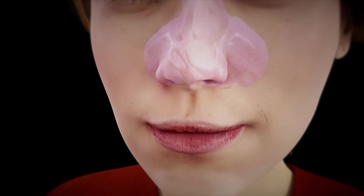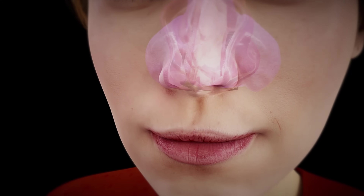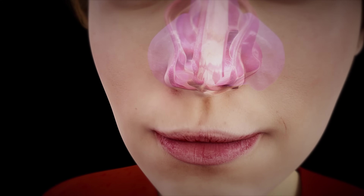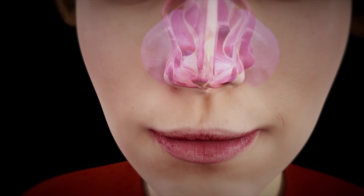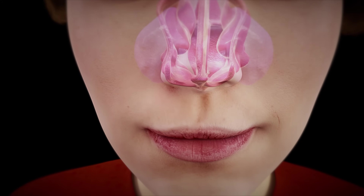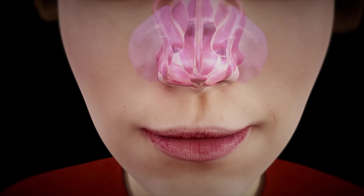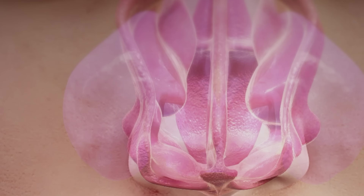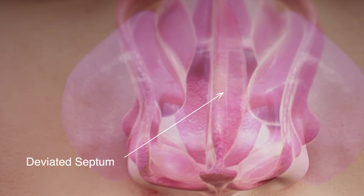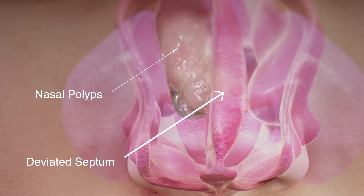Normal healthy sinuses connect to the nasal passages in a complex network of airflow and drainage passages. Recurrent or chronic sinusitis may occur due to anatomic blockages such as a deviated septum, nasal polyps, or blocked sinus openings.